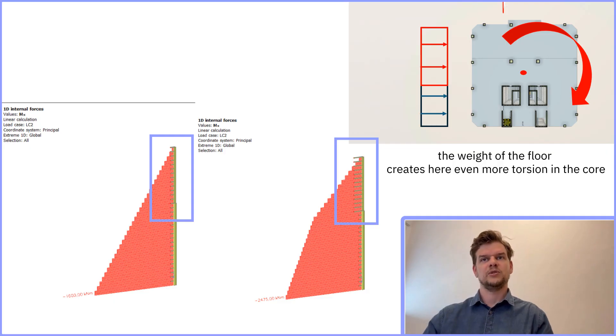Torsion becomes even more severe on the upper floors because the core is smaller and narrower there, as shown in the top right corner of the drawing. To demonstrate what that shape does to the building, I created a simple dummy model. In this setup, the torsional loads at the base increased by about 1.5 times simply due to the shape of the upper section.